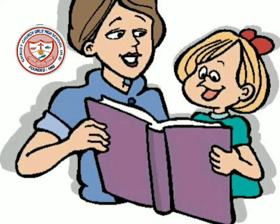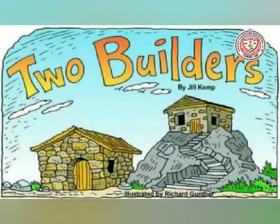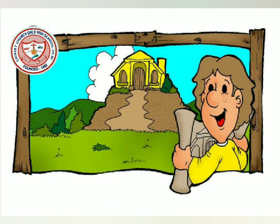So are you ready, children? Now listen to the story carefully. Once upon a time there were two men. They were friends. Both of them decided to build a house. One of the two men was wise and intelligent, and the other one was foolish. So they decided to build a house.